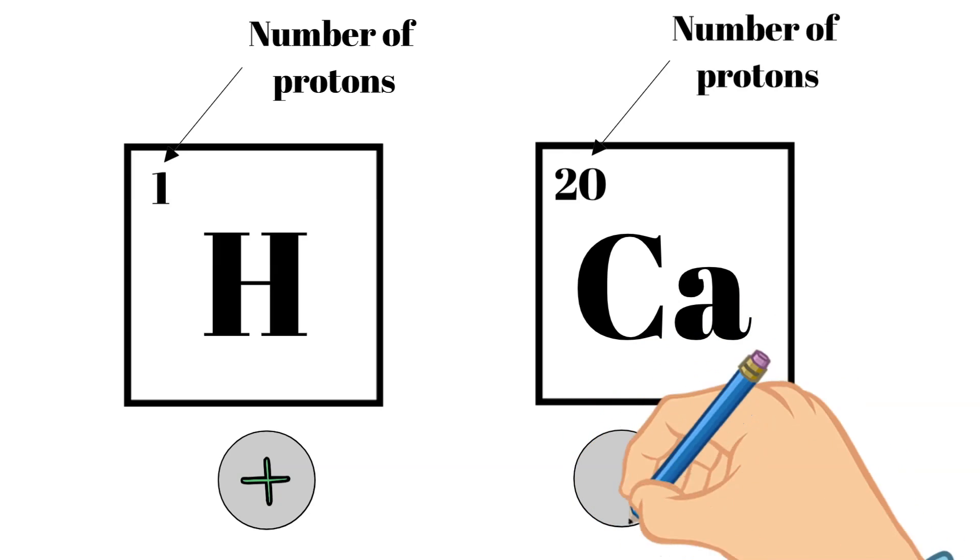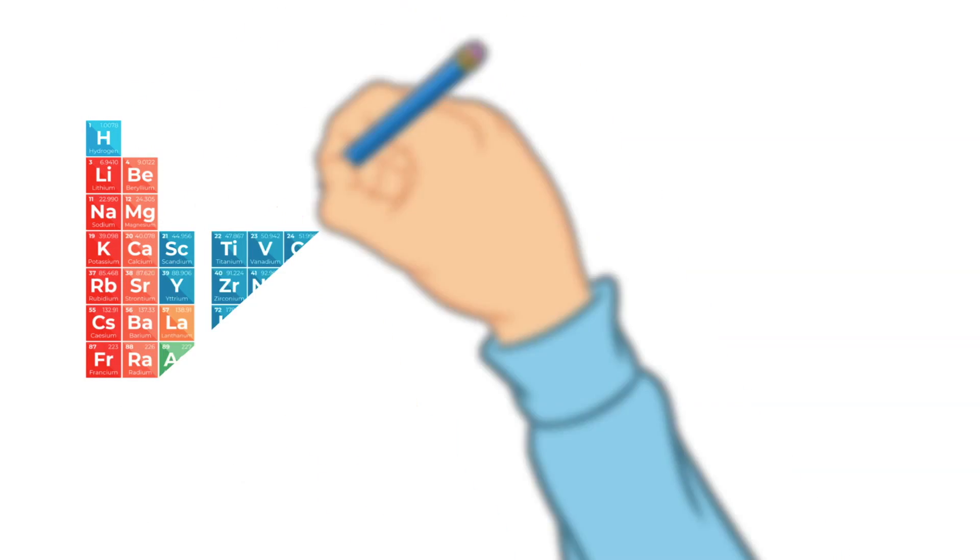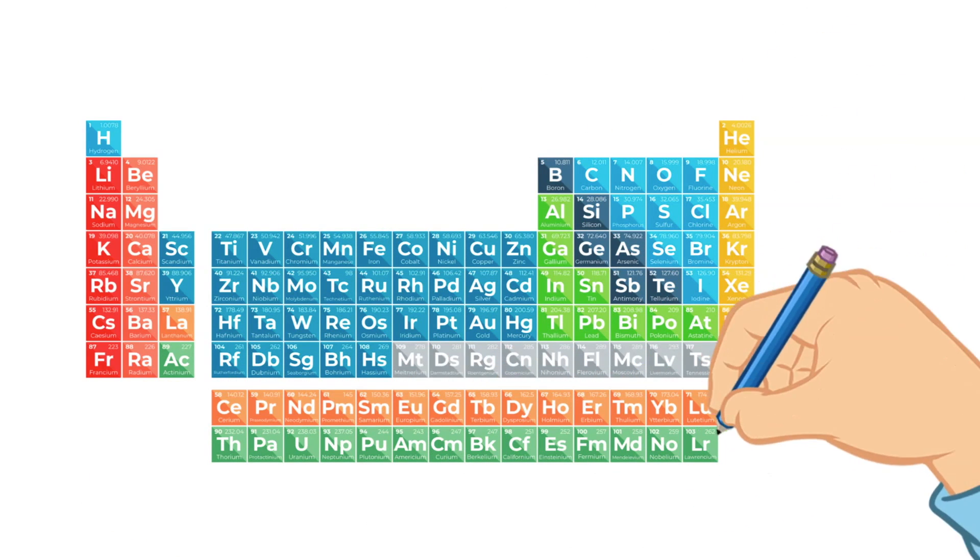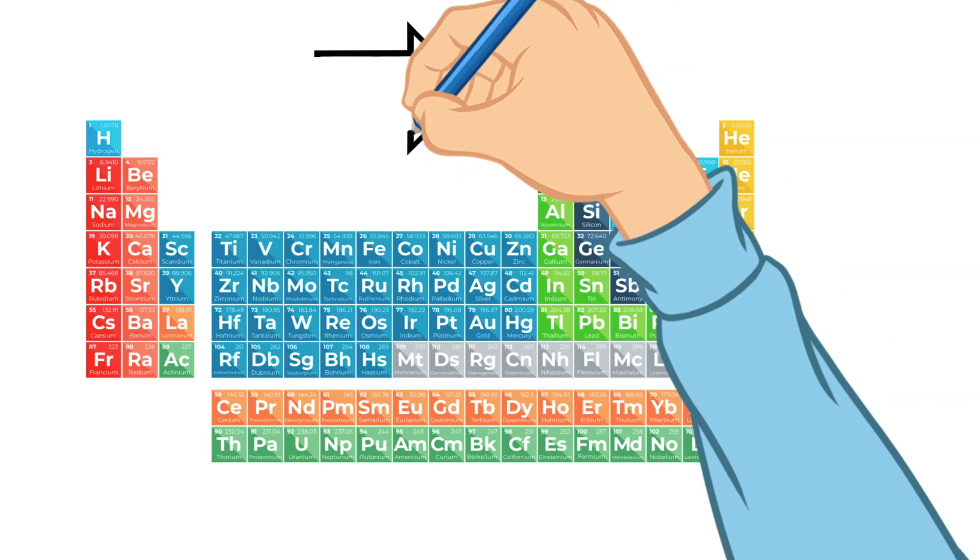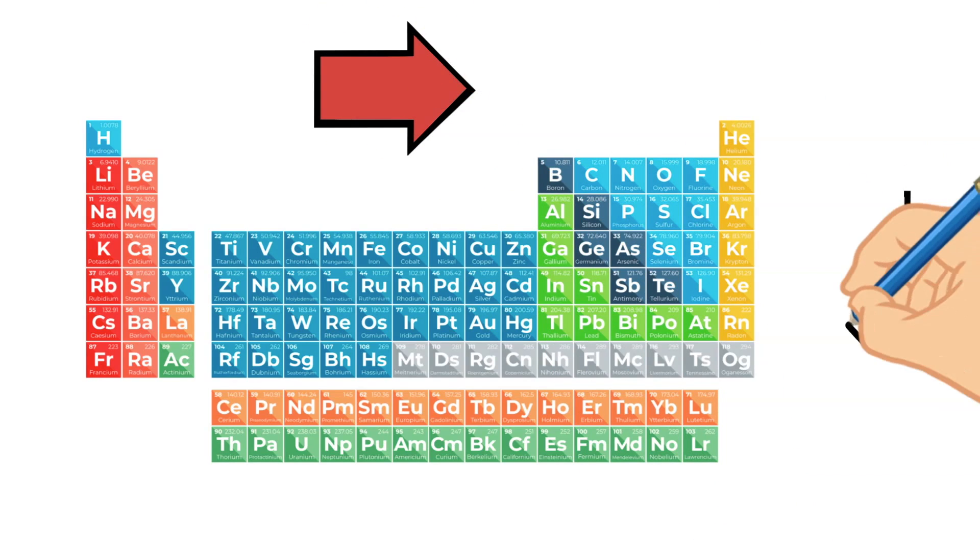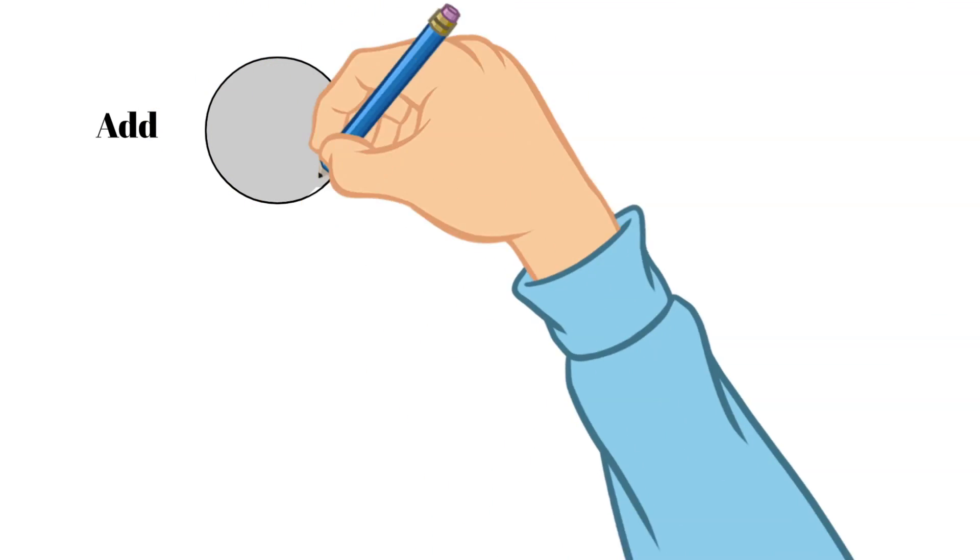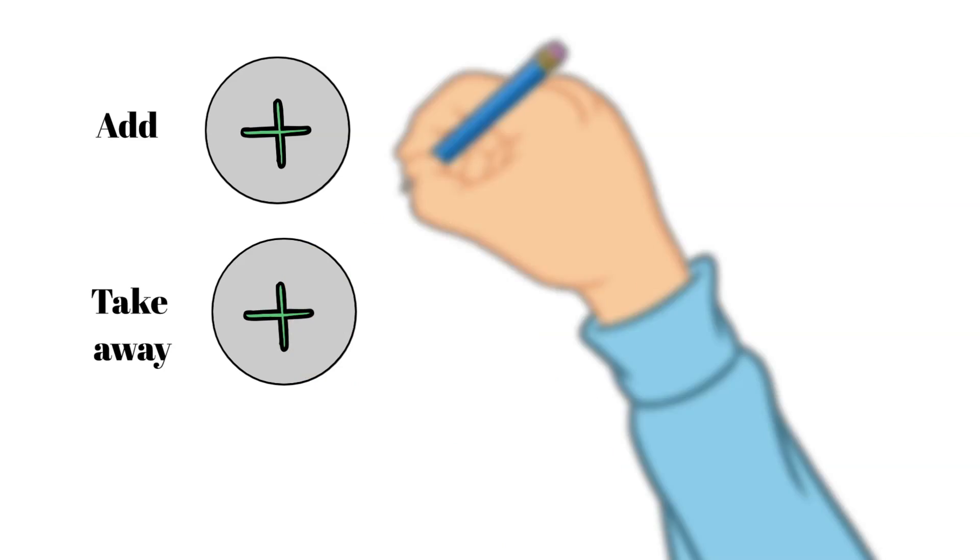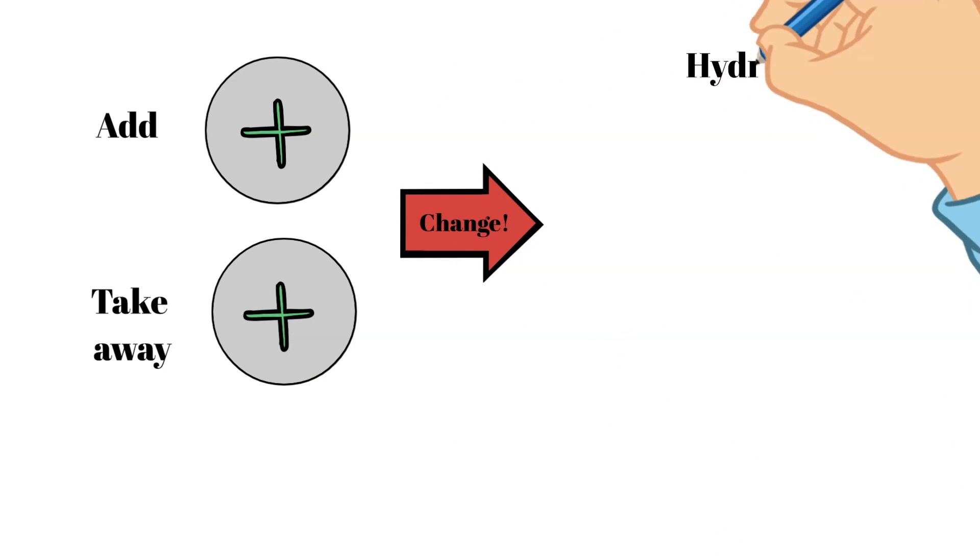The elements in the periodic table are organized in order from the least amount of protons to the most. So if you added or took away from the number of protons in an atom, you changed the element itself. So if you added a proton to hydrogen, you would not have hydrogen at all anymore. You would have helium.